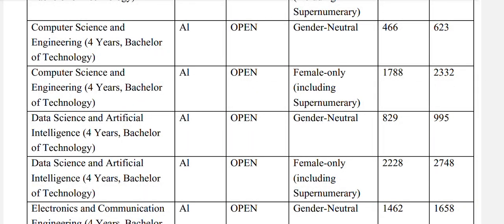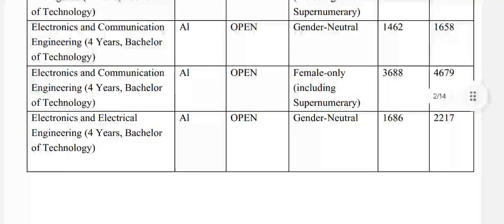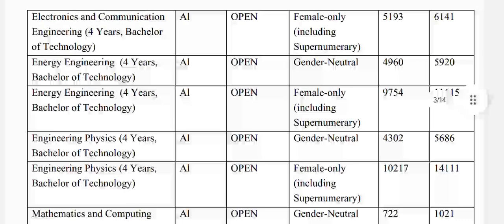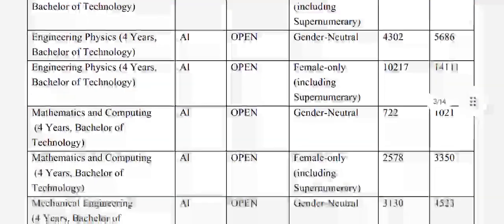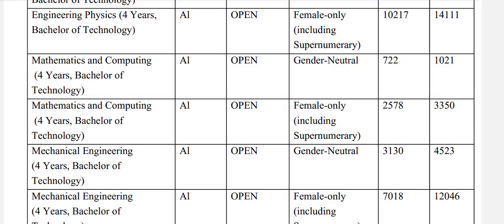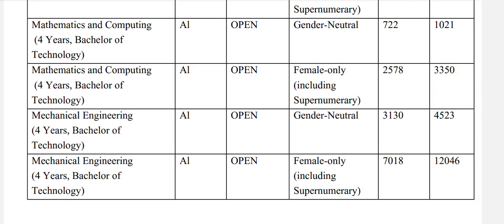Computer Science and Engineering (CSE), Open General gender-neutral: 623, and Open female: 2333. Data Science and Artificial Intelligence, Open General gender-neutral: 995, and Open female: 2748. Electronics and Communication Engineering (ECE), Open General gender-neutral: 1658, and females: 4679. Electronics and Electrical Engineering, Open General gender-neutral: 2217, and for females: 6141. Energy Engineering, Open General gender-neutral: 5686. Mathematics and Computing, Open General gender-neutral: 1021. Mechanical Engineering, Open General gender-neutral: 4523, and for females: 12046.